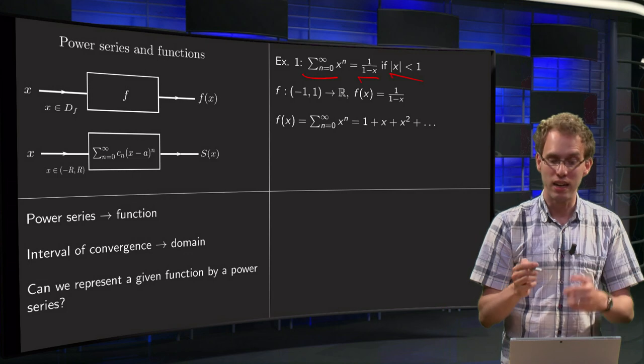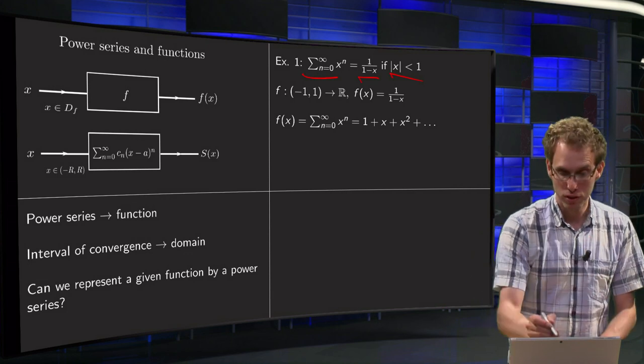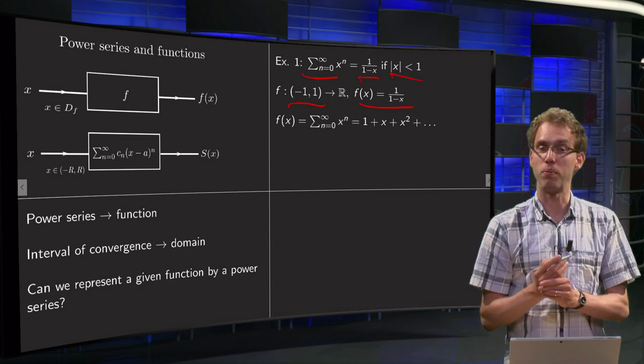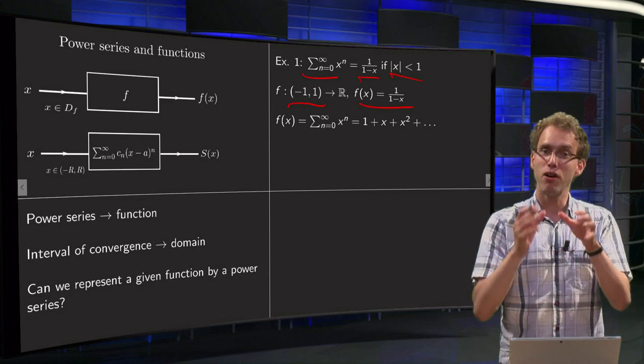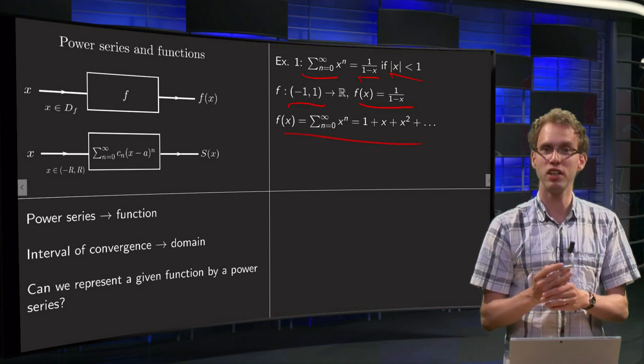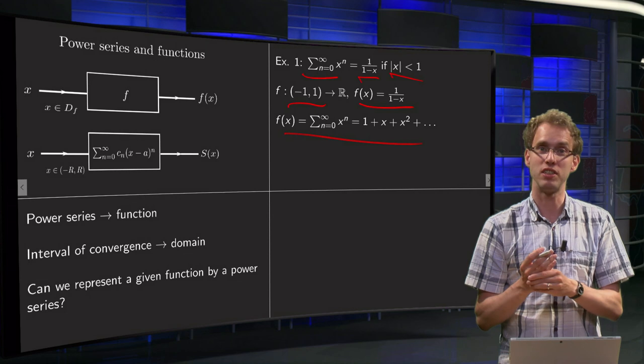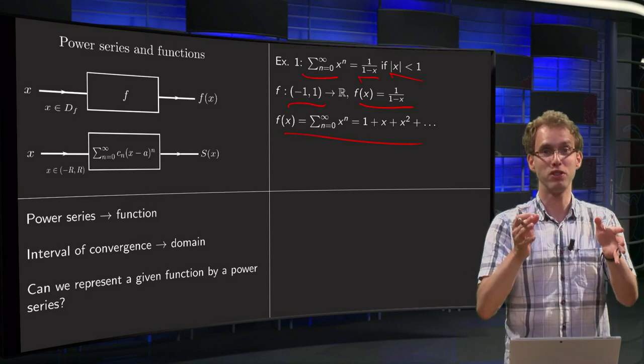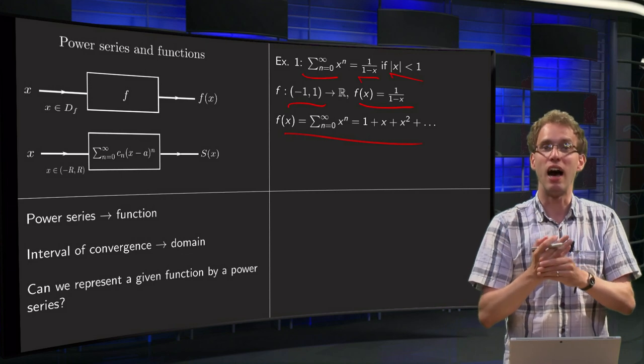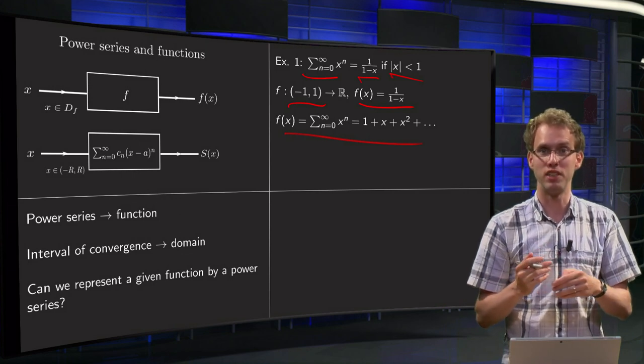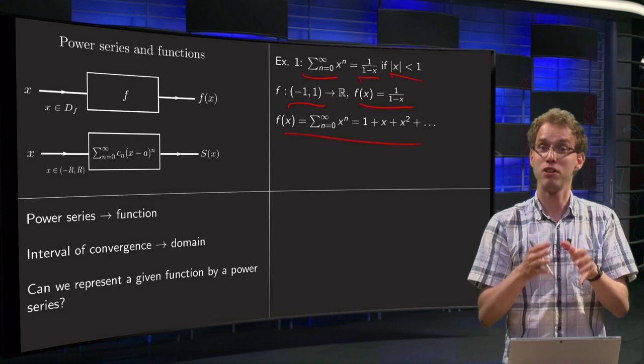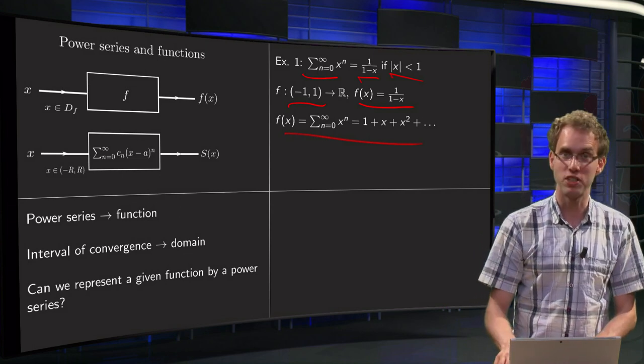But now we see, I can have my function f from (-1,1) to R, f(x) equals 1 over (1 minus x), and then I know if I have this function, the power series is exactly this geometric series: 1 plus x plus x squared, etc. So given this one function, 1 over (1 minus x), I know the power series representation is the geometric series. So I know at least for one function a power series representation.